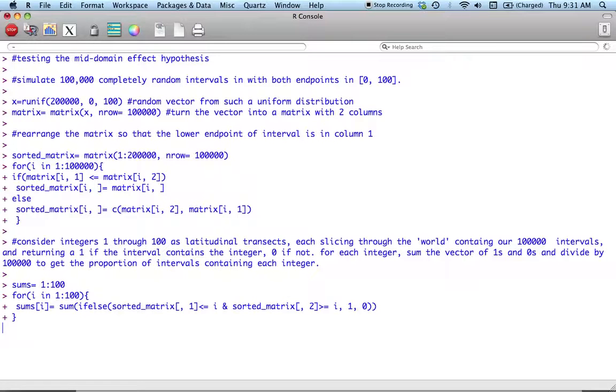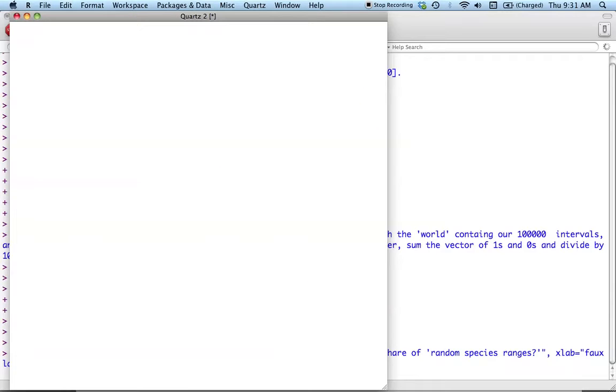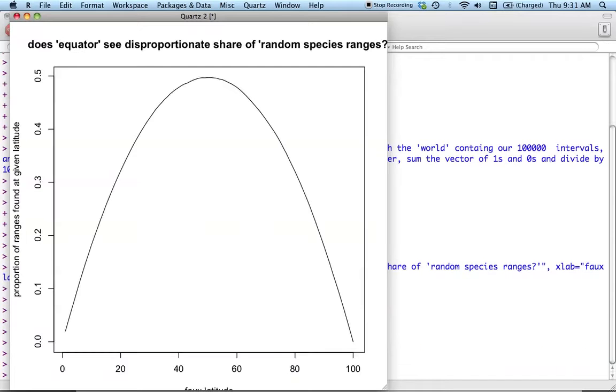and, it's thinking, thinking, thinking, thinking. Okay, so, does our quote-unquote equator at 50 see a disproportionate share of the random species ranges that we've demonstrated or that we've simulated?